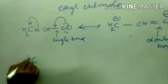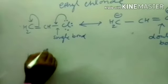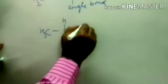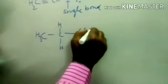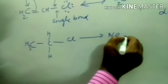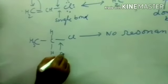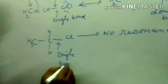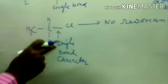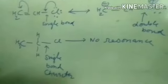But in the case of ethyl chloride, there is no resonance, so it maintains the single bond character. The single bond is always larger than the hybrid bond.